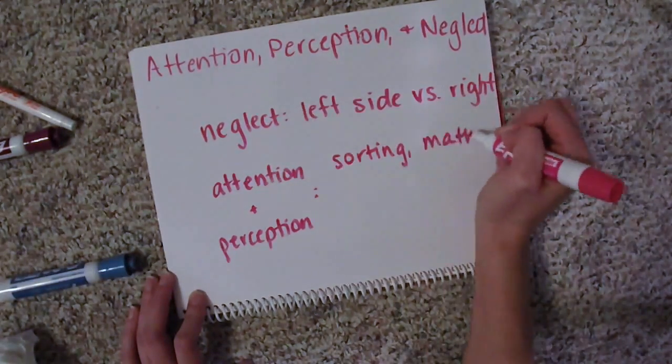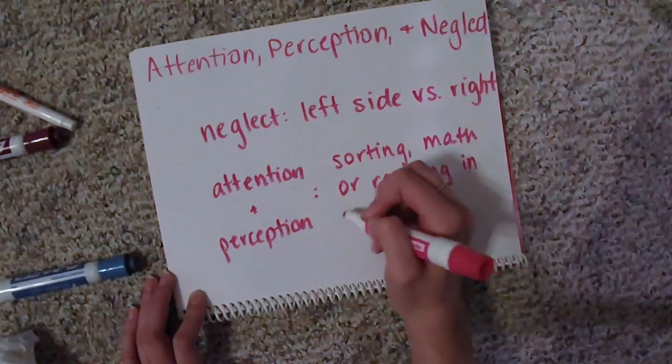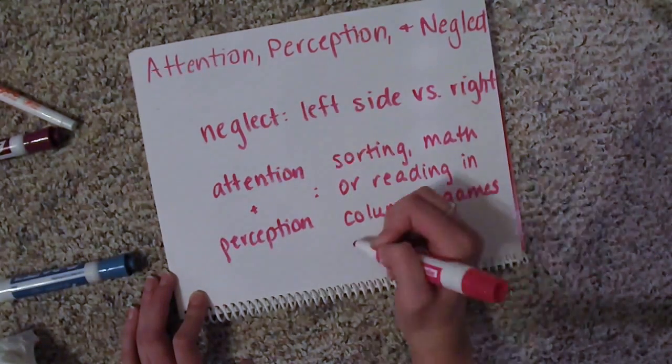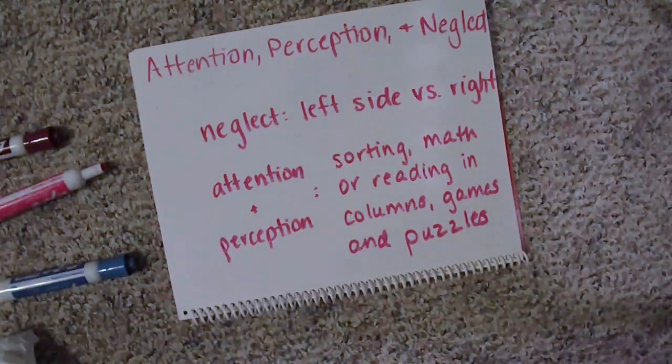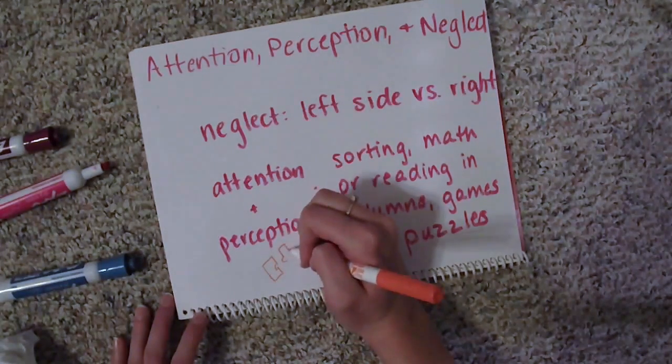Treatment for attention and perception can involve sorting objects according to criteria, following columns in a newspaper, or playing easy card games and doing puzzles.